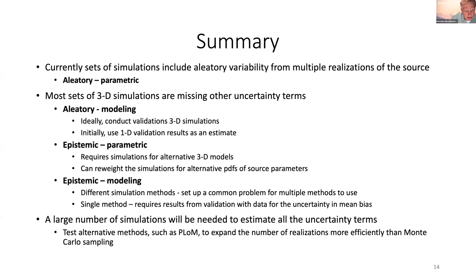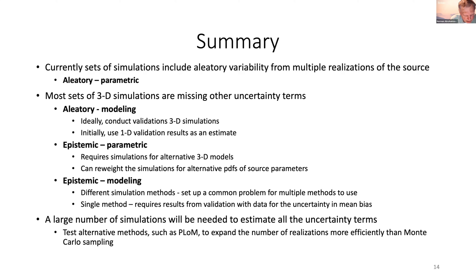In summary: we need all parts of the uncertainty. The aleatory parametric term is being generated from multiple source realizations and most simulation datasets have those numbers. What's missing: the aleatory modeling term must come from 3D validations; epistemic parametric requires alternative 3D velocity models as the key element, with alternative source PDFs addressable by reweighting; and the epistemic modeling term requires either different simulation methods or validations. Ultimately, we need a larger number of simulations and want to test alternative methods like PLom to expand realizations without massive Monte Carlo sampling.